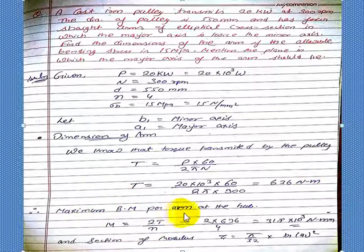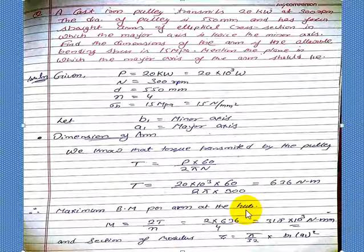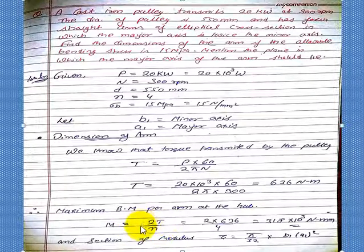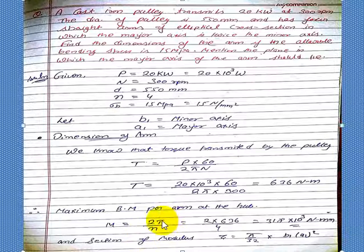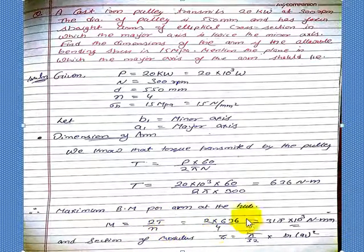Maximum bending moment at the hub. Maximum bending moment per arm at the hub is equal to 2T upon n, where n is the number of arms. So our maximum bending moment, we get from this.